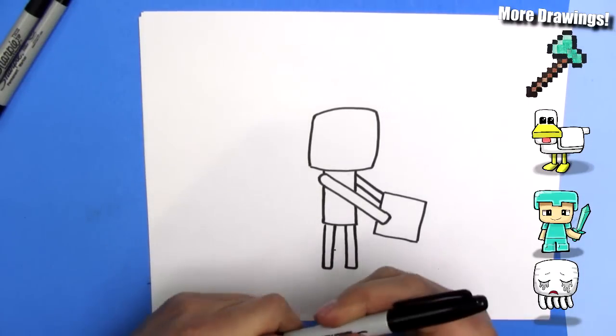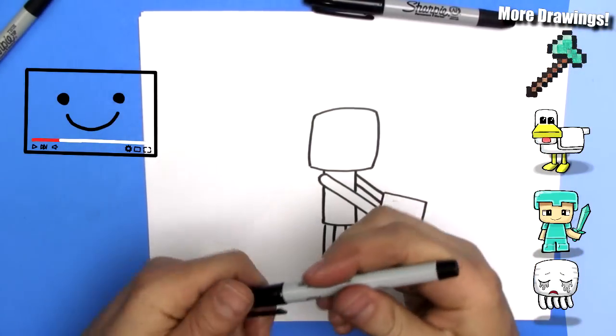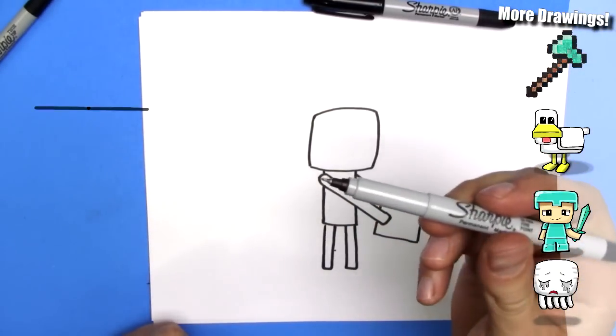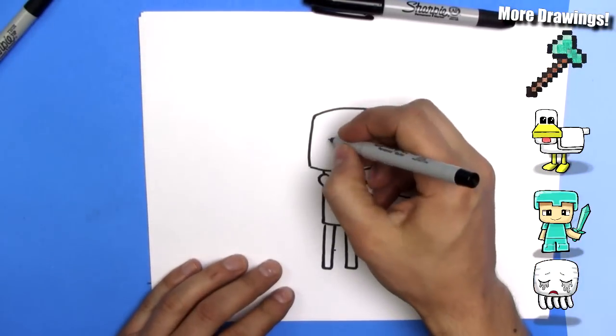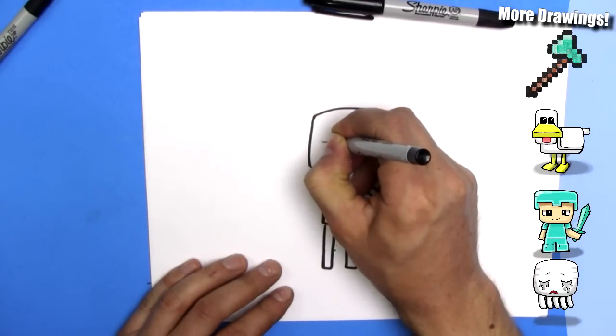Now what we need to do is we need to use a thin Sharpie marker. It's got a much thinner tip on it. And we're going to draw some eyes. Oh no, there we go.